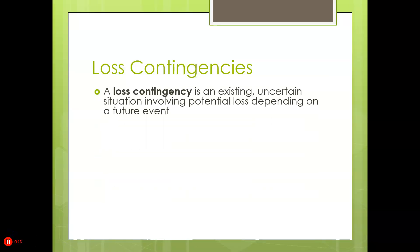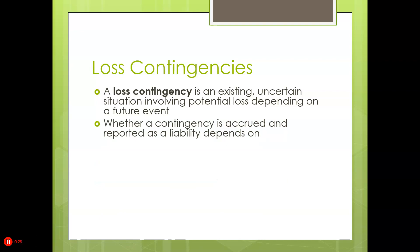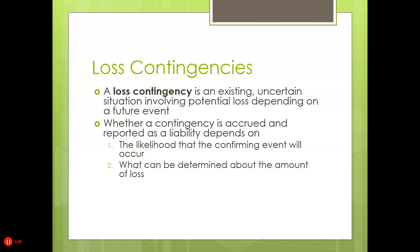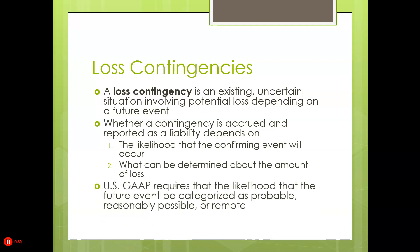Loss contingencies. What this is all about is what happens if something's happened in the past that could affect future revenue. What we need to account for depends on our ability to determine how real it is. We're going to want to accrue it, but it depends on the likelihood that the confirming event will occur and what can be determined about the amount of the loss. US GAAP requires that the likelihood of the event be categorized as probable, reasonably possible, or remote.